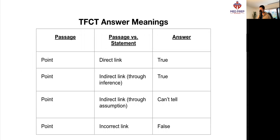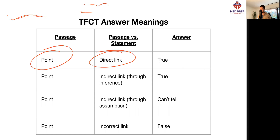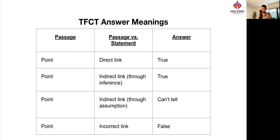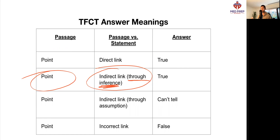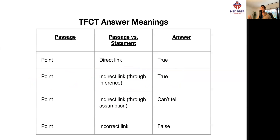Let's get right to it. If the passage makes a point and your question has a direct link to that passage — as in you can literally see word for word that whatever's being said is in the statement of the question as well — then this is going to be true. If the passage makes a point and your statement actually infers something from that passage, then that is also true. The key is the difference between an inference and an assumption. An inference is something where you can read what's being said in the passage, and it is implied that whatever the statement is in the question is true.